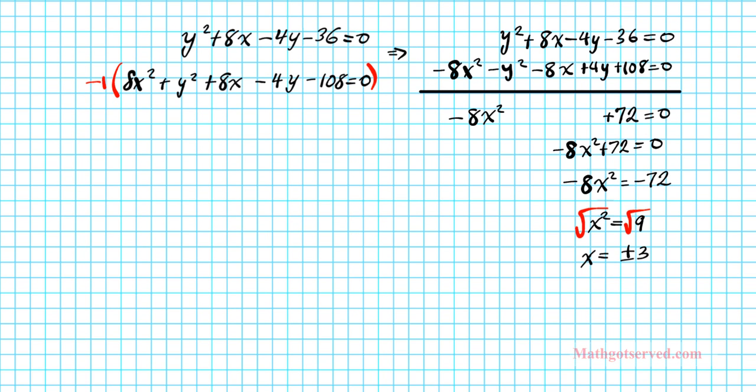Now we have the x values for our solutions. Now let's go ahead and look for the y values. So we're going to start with setting x equals to -3. So for x = -3, what we're going to do is take this x value and substitute it in the first equation since it's simpler than the second equation.